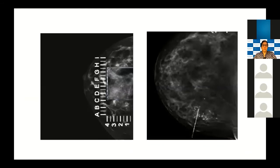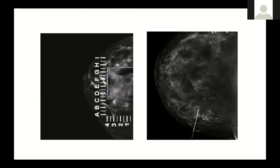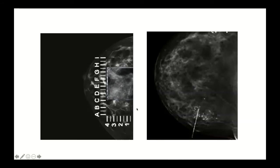I prefer to use ultrasound-guided procedures, but there are times when some lesions are not visible on ultrasound — such as just microcalcifications. In that case, a stereotactic mammographic approach or a simple alphanumeric plate can be used. The alphanumeric compression paddle provides coordinates in the XY plane; with the alphanumeric plate in two axes, or with a stereotactic system in three axes — XYZ — one can place a hook wire.